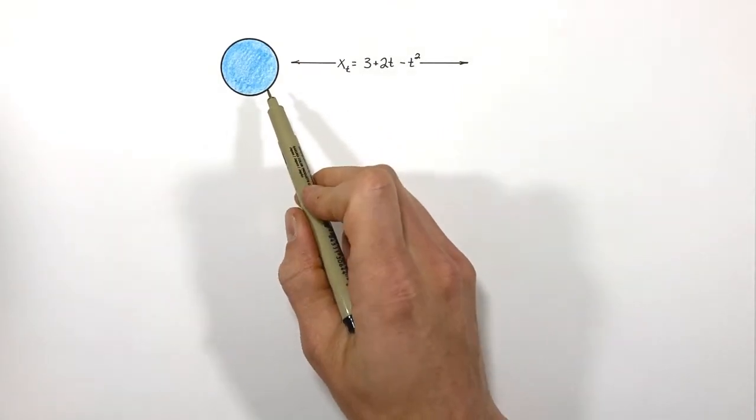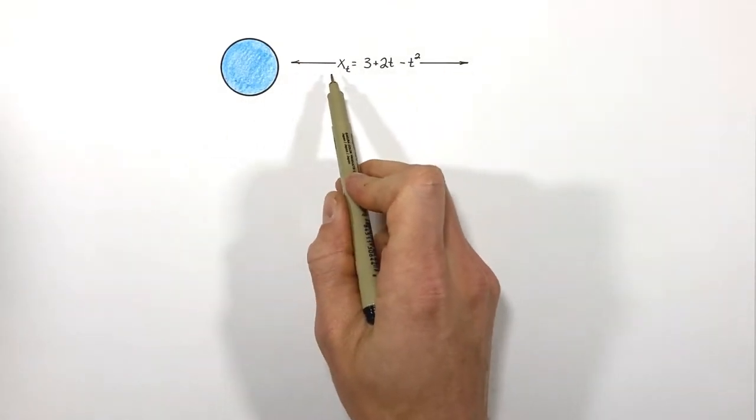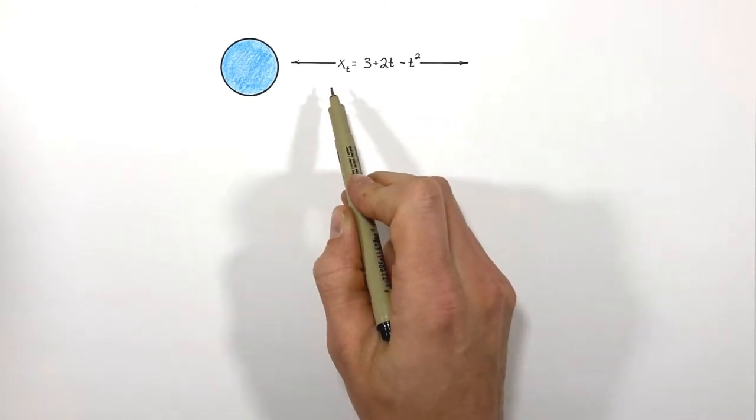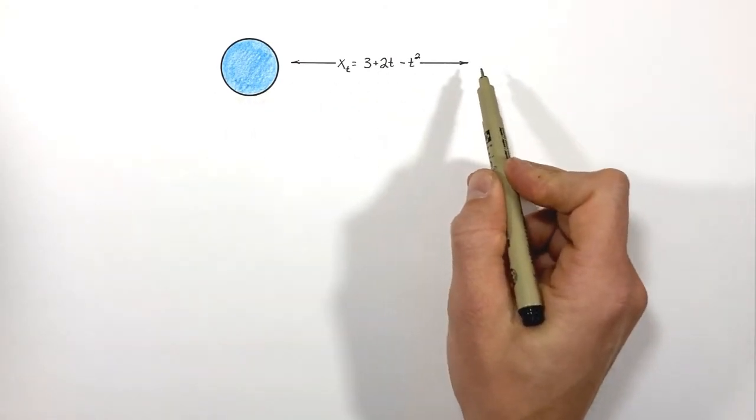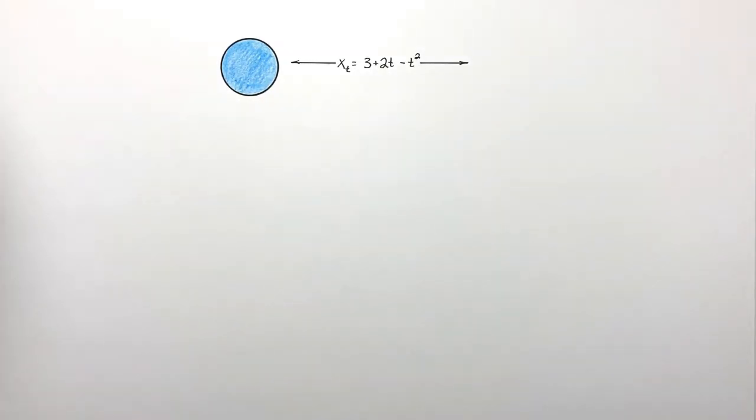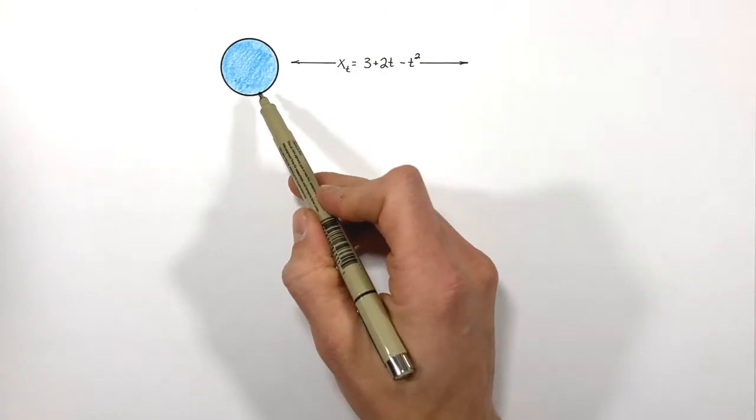All right, today I want to take a look at a particle which is going to move back and forth according to this polynomial equation, and in this problem what I want to do is solve for the maximum position which this particle is going to reach in its motion.